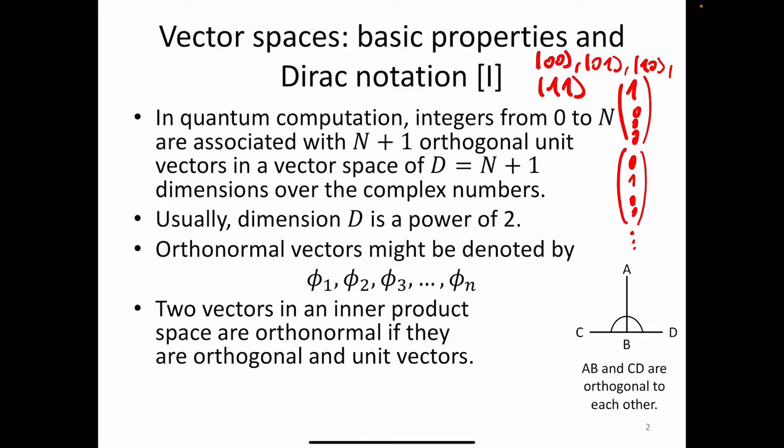So what this means is that we have four-dimensional qubit space. If you remember, 00 is given by (1,0,0,0), 01 is given by (0,1,0,0), and so on. This means we have four-dimensional two-qubit space and they are orthogonal — meaning you only see a 1 in one position in each of these vectors. Usually the dimension D is a power of 2.